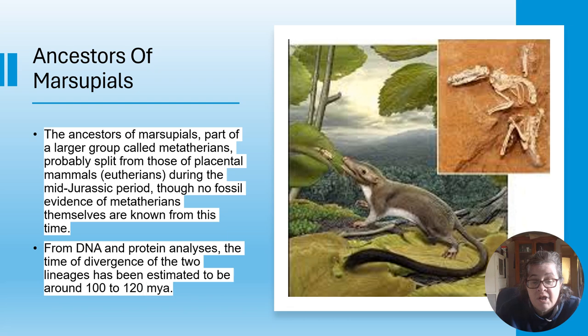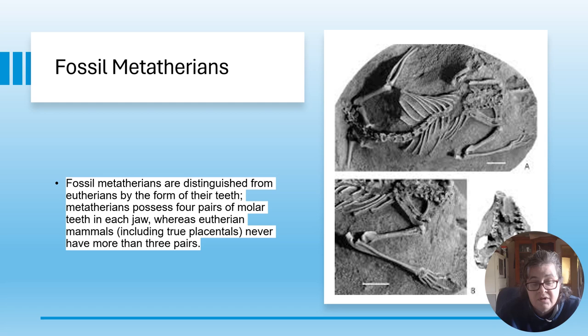The ancestors of marsupials - part of the larger group called metatherians - probably split from the placentals during the mid-Jurassic period, although no fossil evidence of metatherians is known from this time. DNA and protein analysis estimates the time of divergence of the two lineages at 100 to 120 million years ago. Fossil metatherians are distinguished from eutherians by the formation of their teeth - metatherians possess four pairs of molar teeth in each jaw, whereas eutherian mammals, including true placentals, never have more than three pairs.